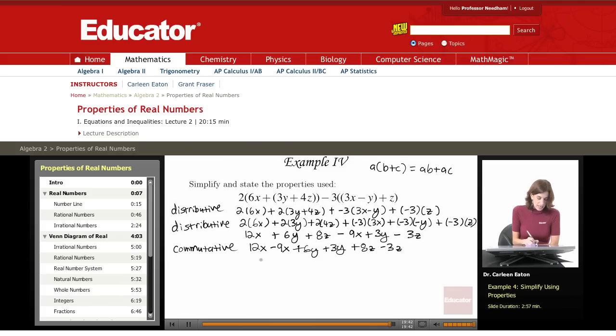So 12x minus 9x is 3x. 6y and 3y gives me 9y. And 8z minus 3z is 5z.